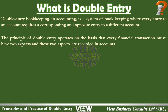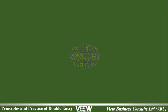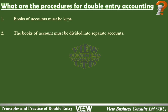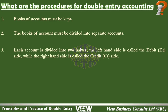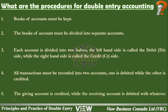The principles of double entry therefore demand that you debit the receiver and credit the giver. The principles for double entry are: one, books of accounts must be kept; two, the books of accounts being kept must be divided into separate accounts; three, each account is divided into two halves — the left-hand side is called the debit side, while the right-hand side is called the credit side. All transactions must be recorded into two accounts: while one is debited, the other is credited. The giving account is credited while the receiving account is debited with whatever the value of the transaction is.